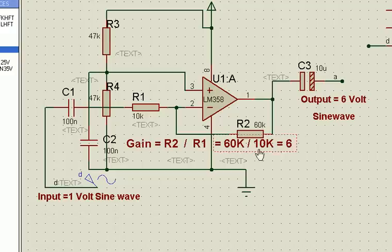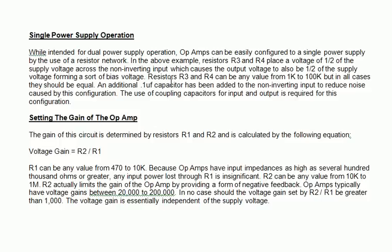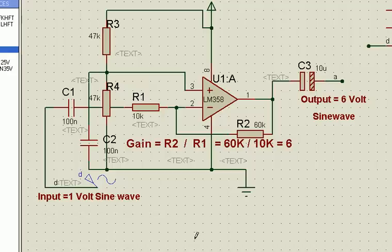That is how it works as far as the operational amplifier is concerned. A 0.1 microfarad has been added to the non-inverting input to reduce noise caused by this configuration. The use of coupling capacitors for input and output is required for this configuration. This is the coupling capacitor for the input and this is the coupling capacitor for the output.